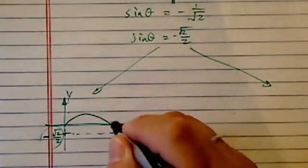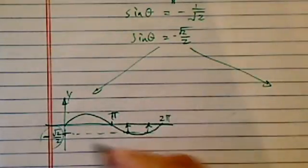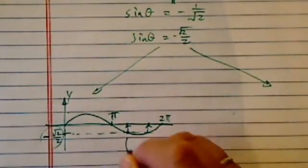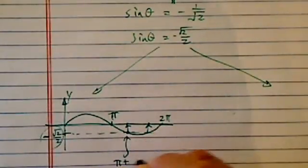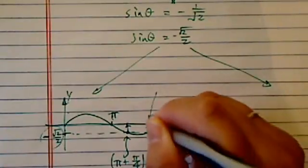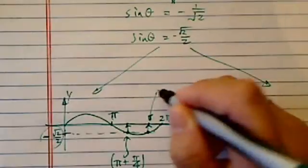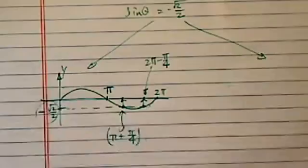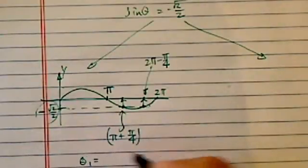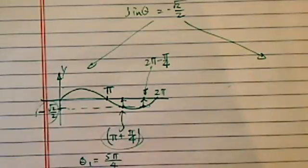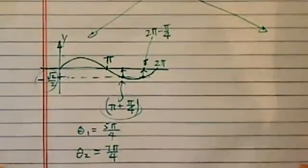In order to find the angles: here's pi. I know this value is 45 degrees, so angle 1 is pi plus pi over 4, and angle 2 is 2 pi minus pi over 4. So my two angles are theta 1 equal to 5 pi over 4, and theta 2 equal to 7 pi over 4. That's one method.